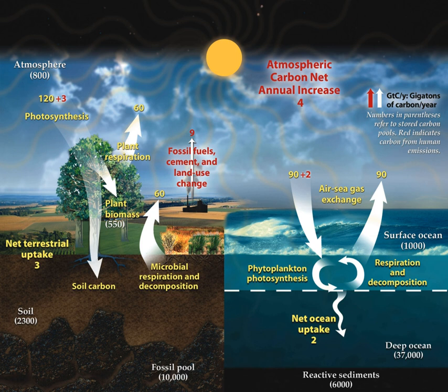The carbon cycle is the biogeochemical cycle by which carbon is exchanged among the biosphere, pedosphere, geosphere, hydrosphere, and atmosphere of the Earth.